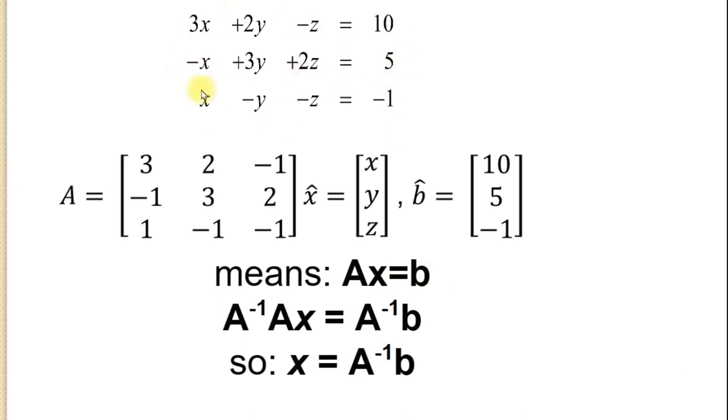So let's think about it. So if we do that matrix multiplication, we're going to dot product the first row of A with the column, the only column, of x bar. And that's going to result in the upper right value in b. 3 will multiply by x. 2 will multiply by y. Negative 1 will multiply by z. And we'll sum all those up, and it will equal 10.